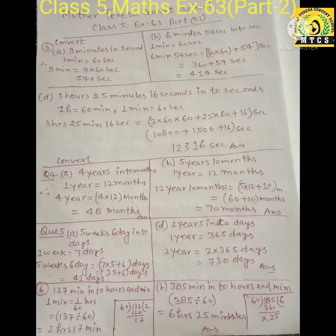Now question number 5, part D: 2 years into days. 1 year is equal to 365 days, then 2 years is equal to 2 into 365. After multiplying you will get 730 days. It is your answer.